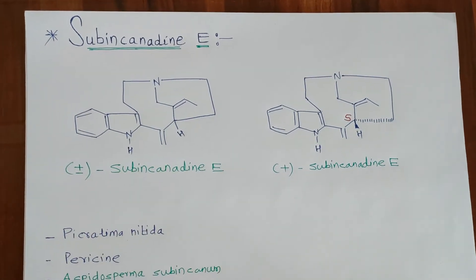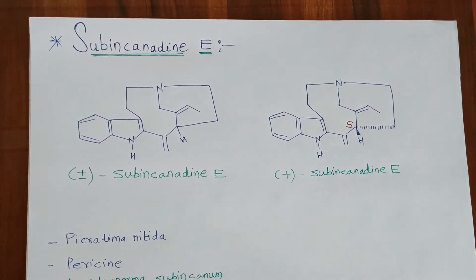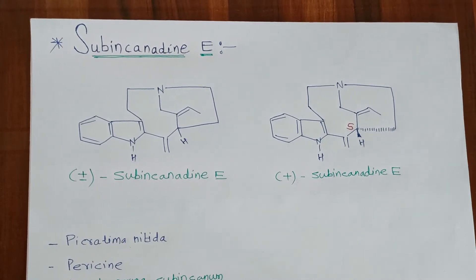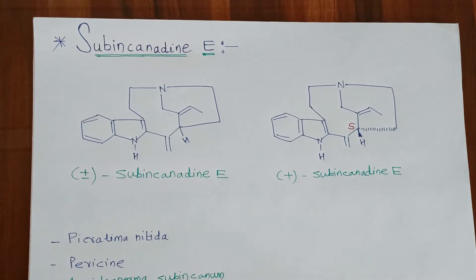In 2014, Jai and co-workers first reported the total synthesis of (±)-Subincanadine E.